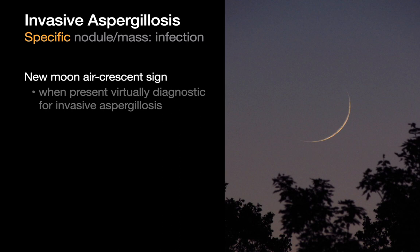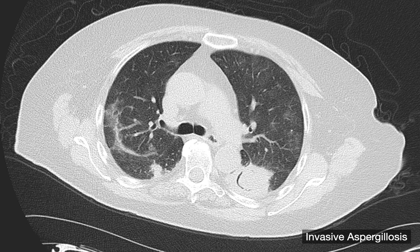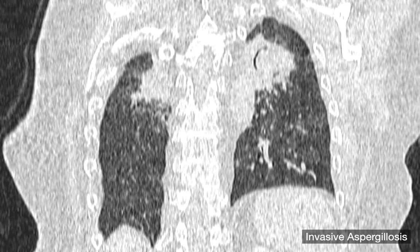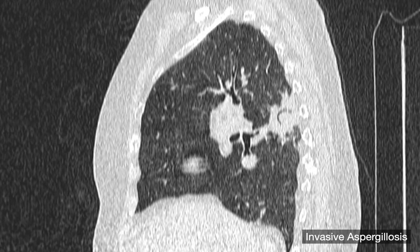What we see during a very short period as the immune system begins to respond is a zone of cavitation in the nodule that forms a very thin, uniform width cavitation that looks like the new moon. Here are some imaging examples to show you — a nodular mass with this thin little arc of cavitation, just like the new moon. Sometimes it's not visible on the axial plane; you might have to look at coronal or sagittal to truly appreciate it. But when we see that pattern of cavitation, it's highly specific for invasive aspergillus.